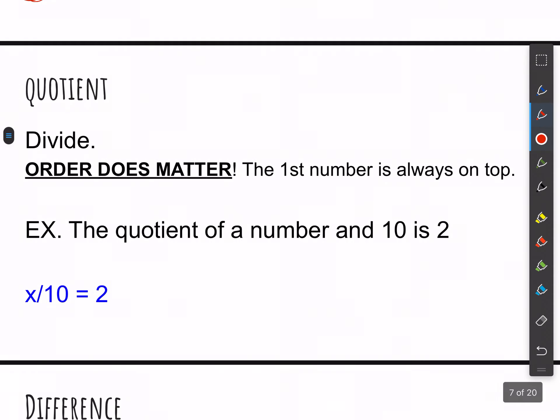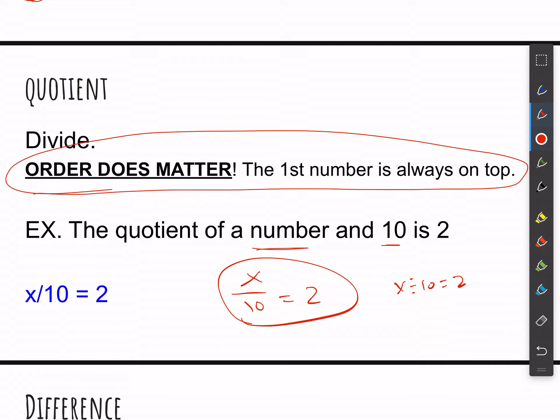And then quotient. Quotient means divide. Order definitely matters with quotients. The first number is always on top. So this is important, you guys, because this is one that a lot of students miss. So it says the quotient of a number and 10 is 2. So whenever you see the quotient of something, the first number that's given is always on the top. So think of this as a fraction. Like a fraction is just a way of dividing. So here the first number is a variable. So we would say x. And then the second number is 10. So x over 10 equals 2. The other way you could write that is x divided by 10 equals 2. But typically we're moving more to these fractions when we're in algebra.